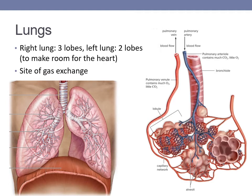The right lung has three lobes and the left lung has two lobes, with an indentation to make room for the heart. The alveoli in the lungs are the site of gas exchange. Each lung is made up of secondary and tertiary bronchi, smaller bronchioles, and alveoli. Each lung has about 300 million alveoli, each surrounded by blood capillaries for gas exchange.